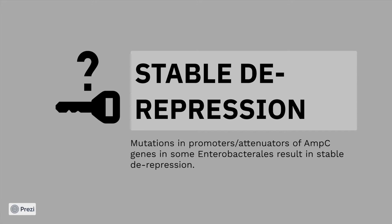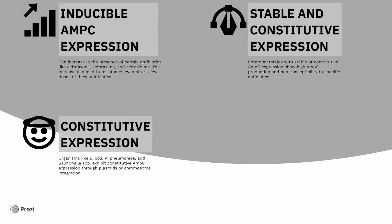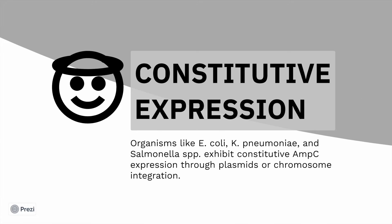Next is stable derepression. Here you have mutations in the promoters and attenuators of the AMP-C gene resulting in stable derepression, so with the derepression there is increased production of AMP-C. Next is constitutive expression: organisms like E. coli, Klebsiella pneumoniae, and Salmonella exhibit constitutive AMP-C expression through plasmids or chromosomal integration.